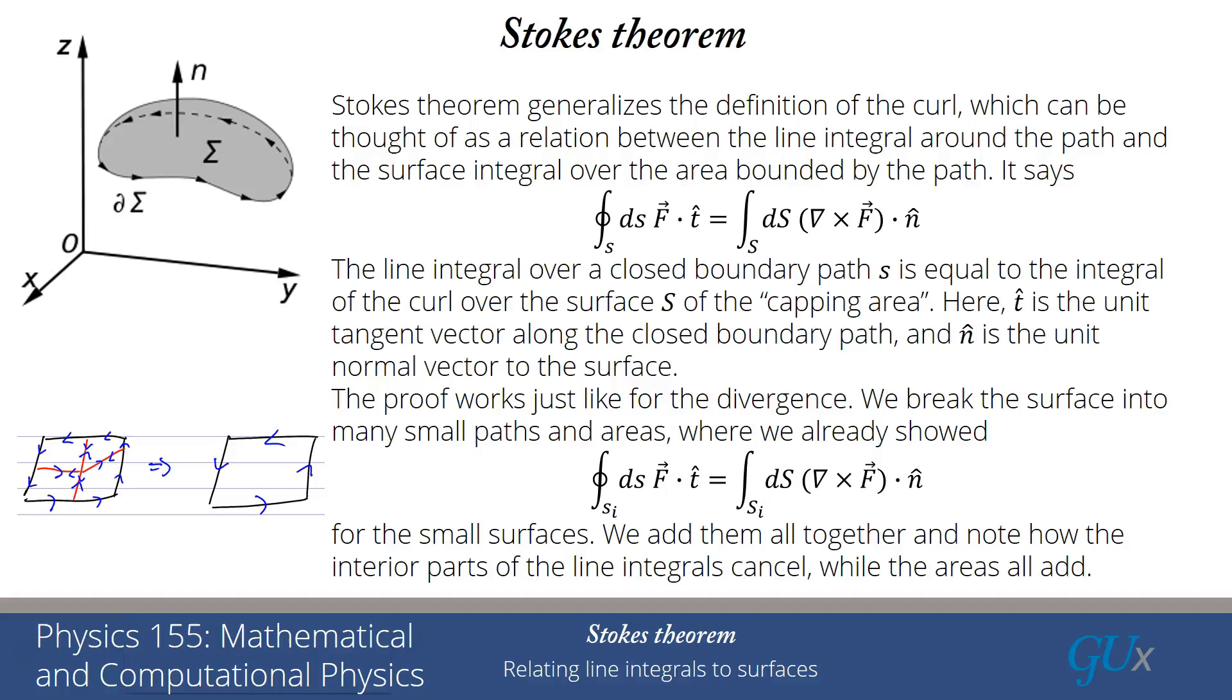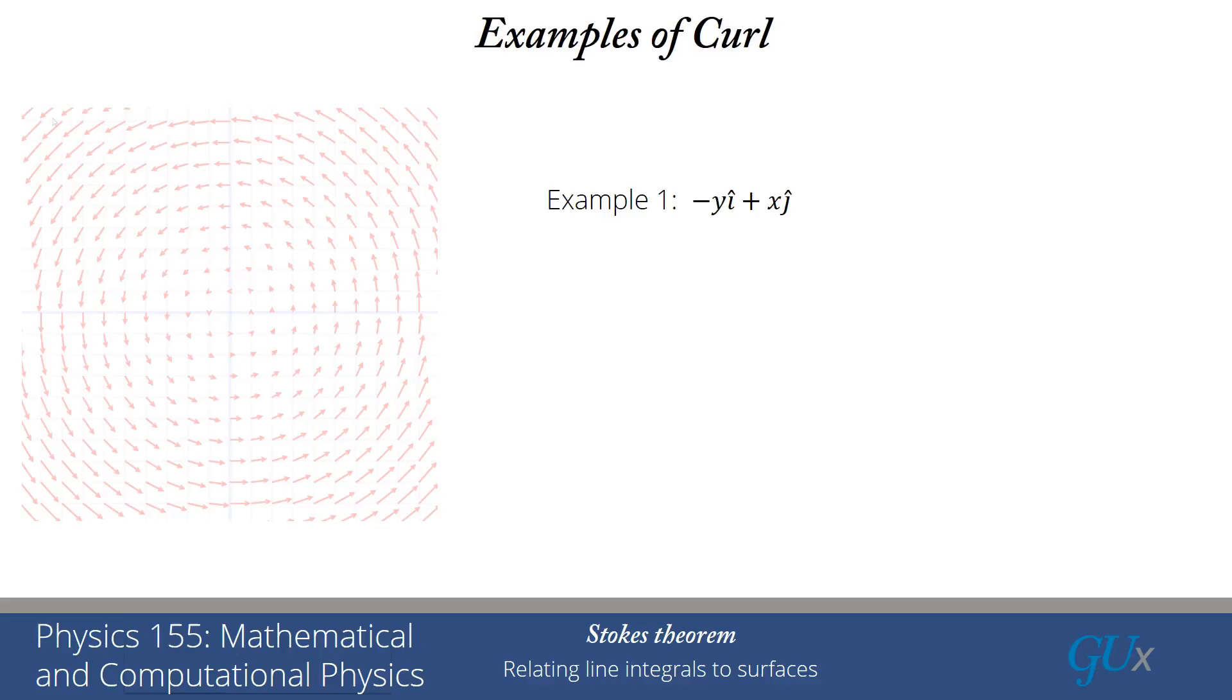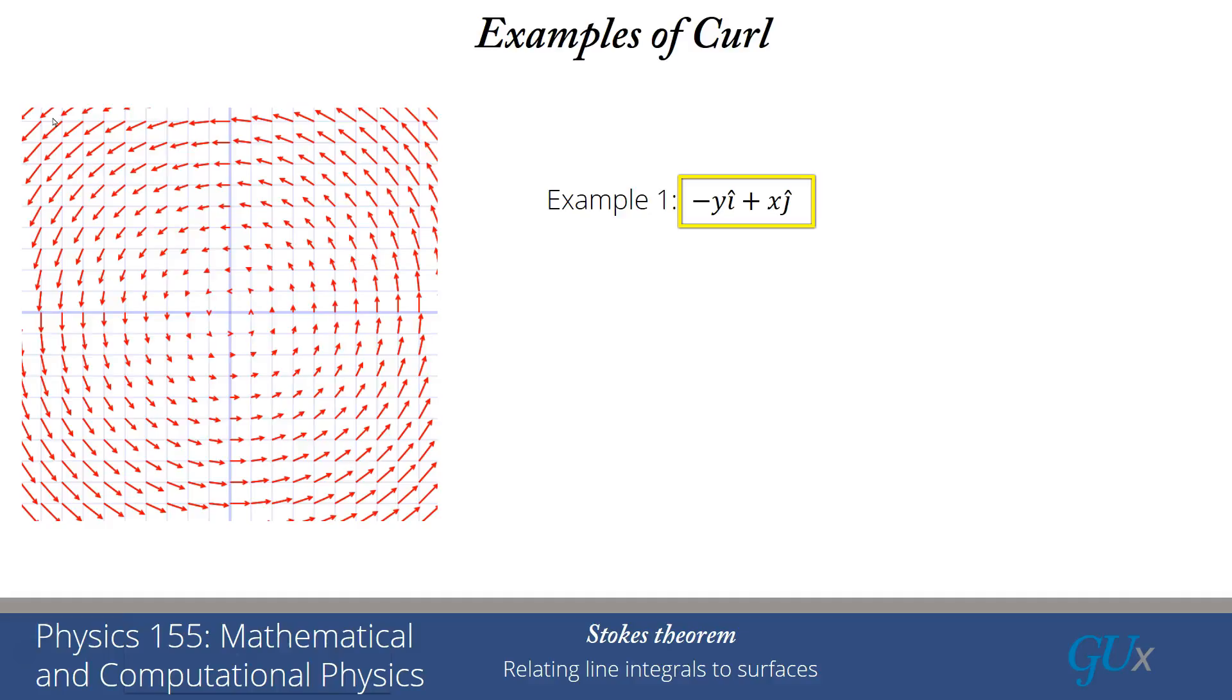Our first example is the one where we have this clear rotation, minus y times the unit vector in the x direction, plus x times the unit vector in the j direction. Anyone who looks at this says this rotates. That appears to be completely clear.